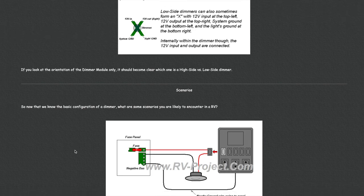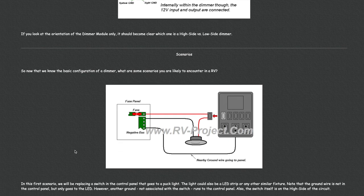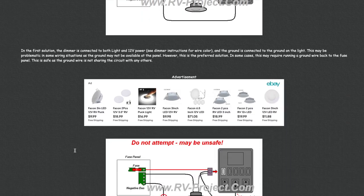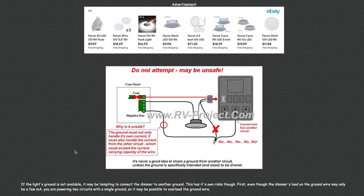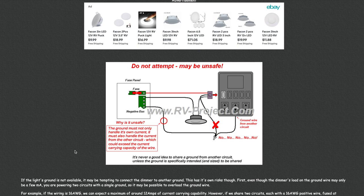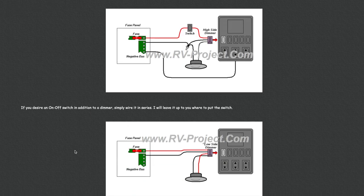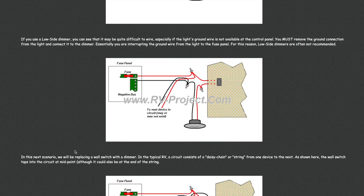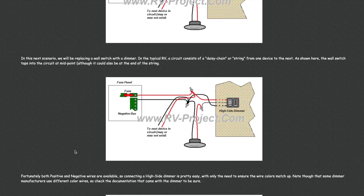I then provide a set of scenarios on dimmer wiring. The first scenario is replacing a console switch with a high side dimmer. I then provide a few pitfalls to avoid when doing this kind of wiring. Then I provide the equivalent wiring scheme if you're going to use a low side dimmer. In the next scenario, I replace a wall switch in the RV with a high side dimmer as well as a low side dimmer.